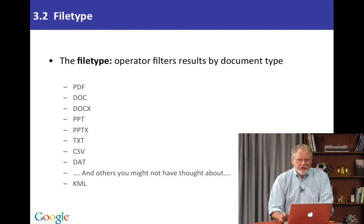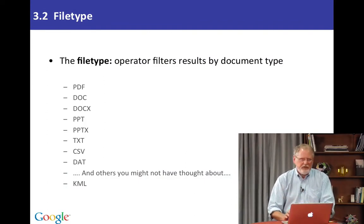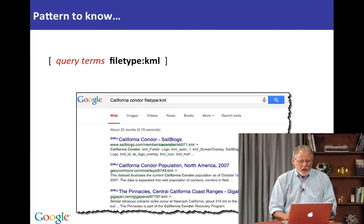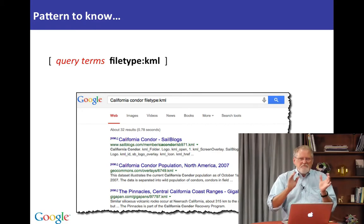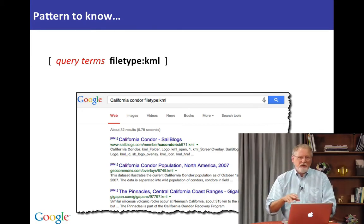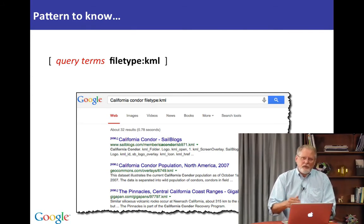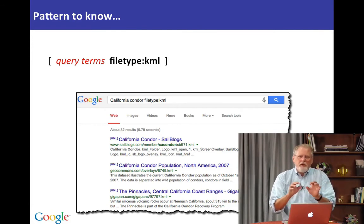So there are a lot of different kinds of files you can search for: PDF files, doc files, all these different file types, including a bunch you might not have thought about, like KML files or KMZ files. Here's the pattern: you want to do your query for whatever it is you're searching for, and then use file type, colon, and then whatever. Now remember, if you want to find different kinds of files — like say a DAT file, which is a data file, or a CSV file, which is a comma separated variable file — you would do filetype:CSV or filetype:DAT.